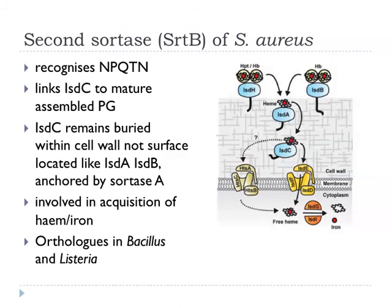Sortase B of Staph aureus doesn't recognize LPXTG; instead it recognizes a motif NPQTN, and it links the protein IsdC to the mature assembled peptidoglycan. This is buried in the cell wall — it's not flapping around sorted to the surface. Some other components of the same system are actually sorted by sortase A. This whole system works together to scavenge iron from haemoglobin — haemoglobin binds the surface proteins, they pass the iron on in the form of heme into components buried deeper in the cell wall, and then transport systems allow the heme to get across into the cytoplasm.